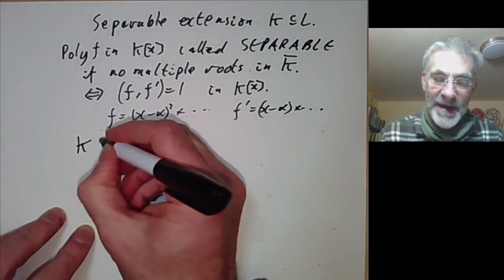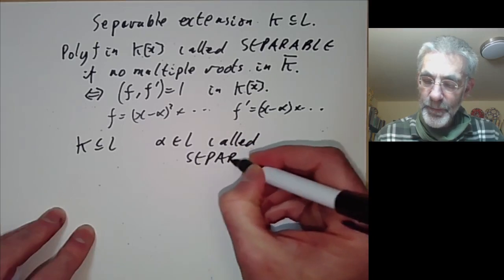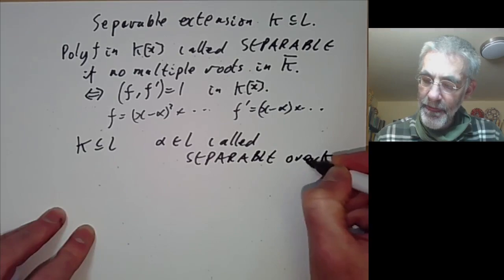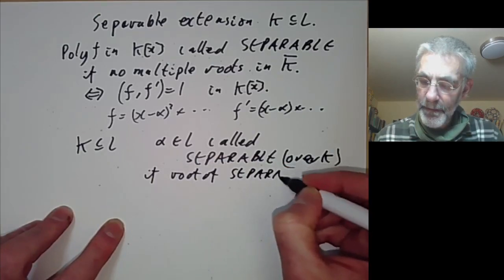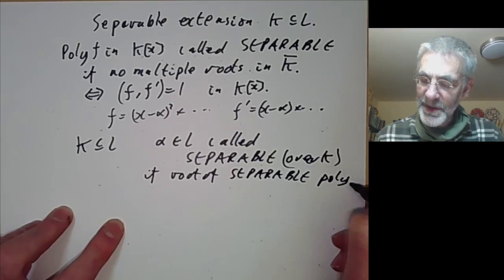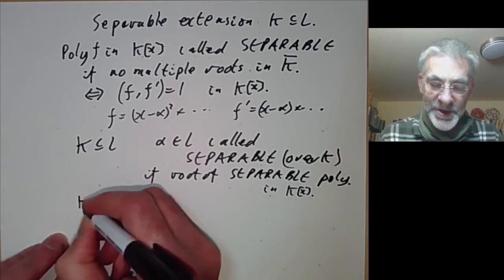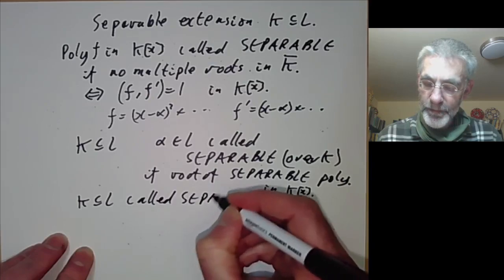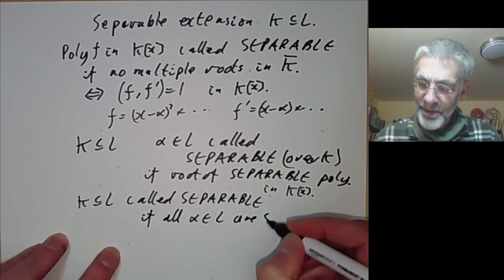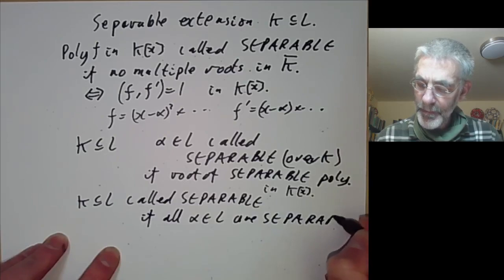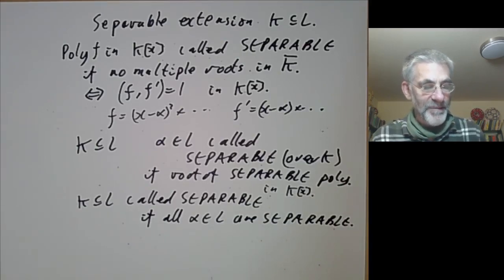In an extension K contained in L, an element α in L is called separable over K if it is the root of a separable polynomial, which we may as well assume is irreducible — a separable irreducible polynomial in K[x]. And finally, the extension K of L is called separable if all α in L are separable over K.